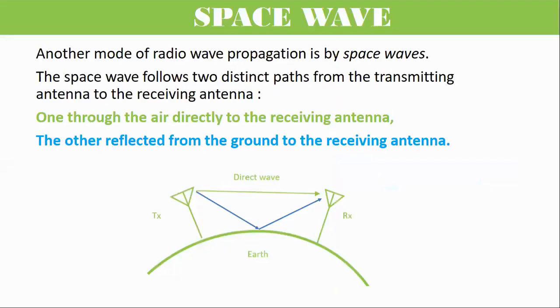Space wave propagation is the type of radio wave propagation in which the radio waves are propagated either directly from transmitting antenna to receiving antenna or by getting reflected from the ground.